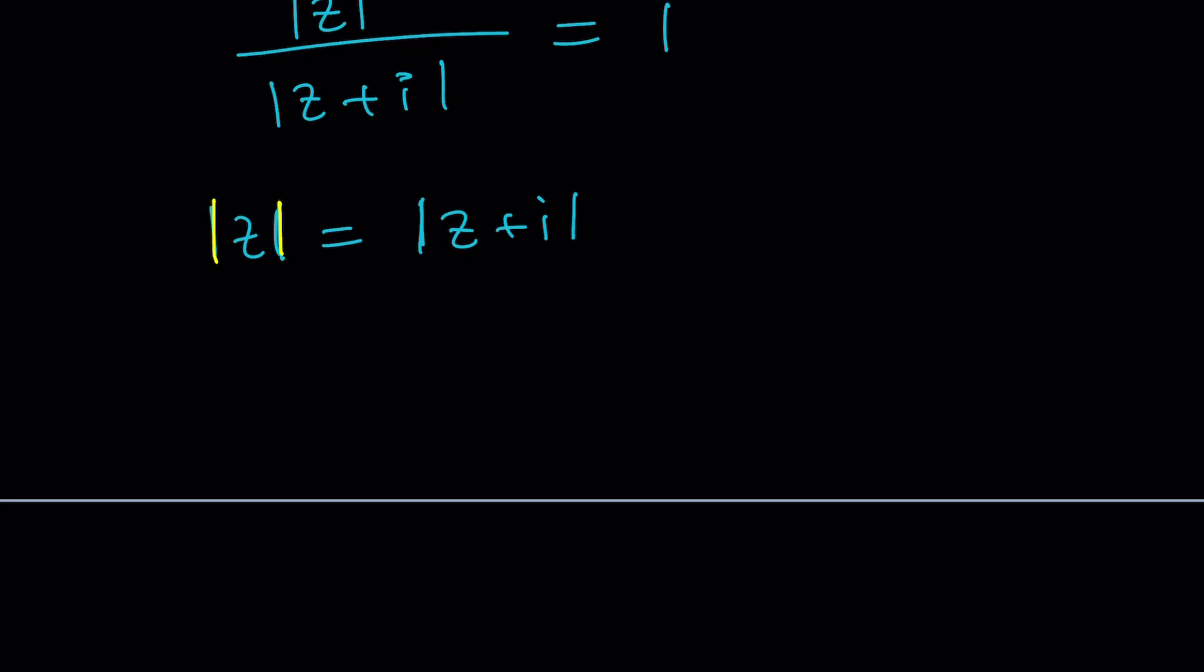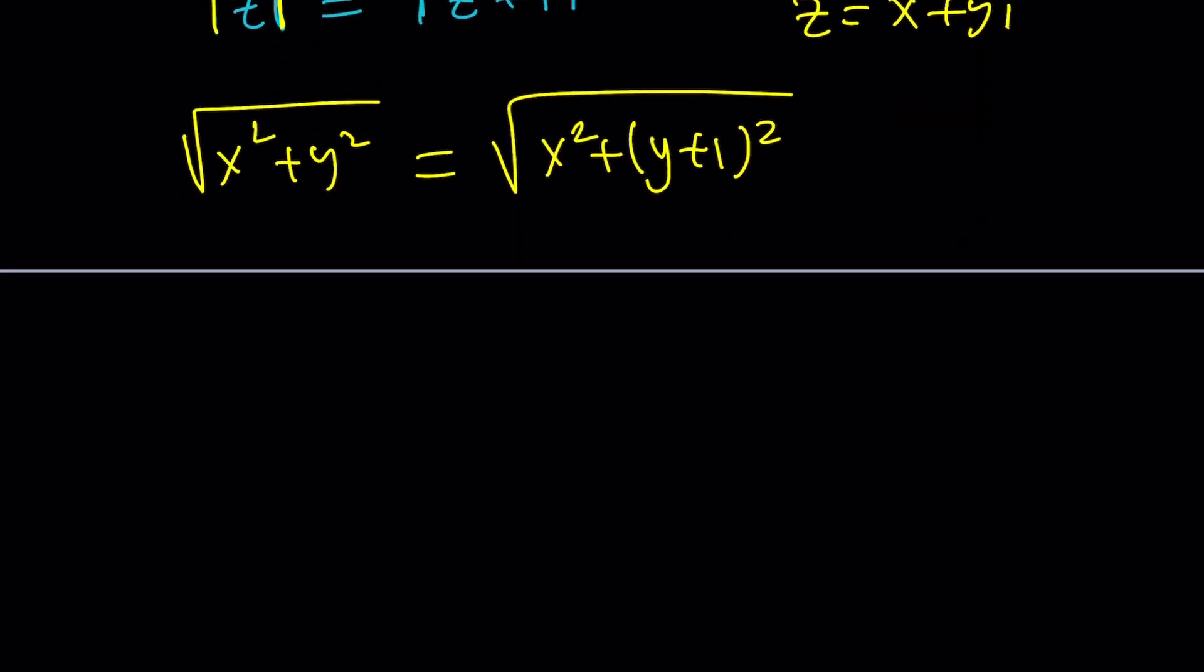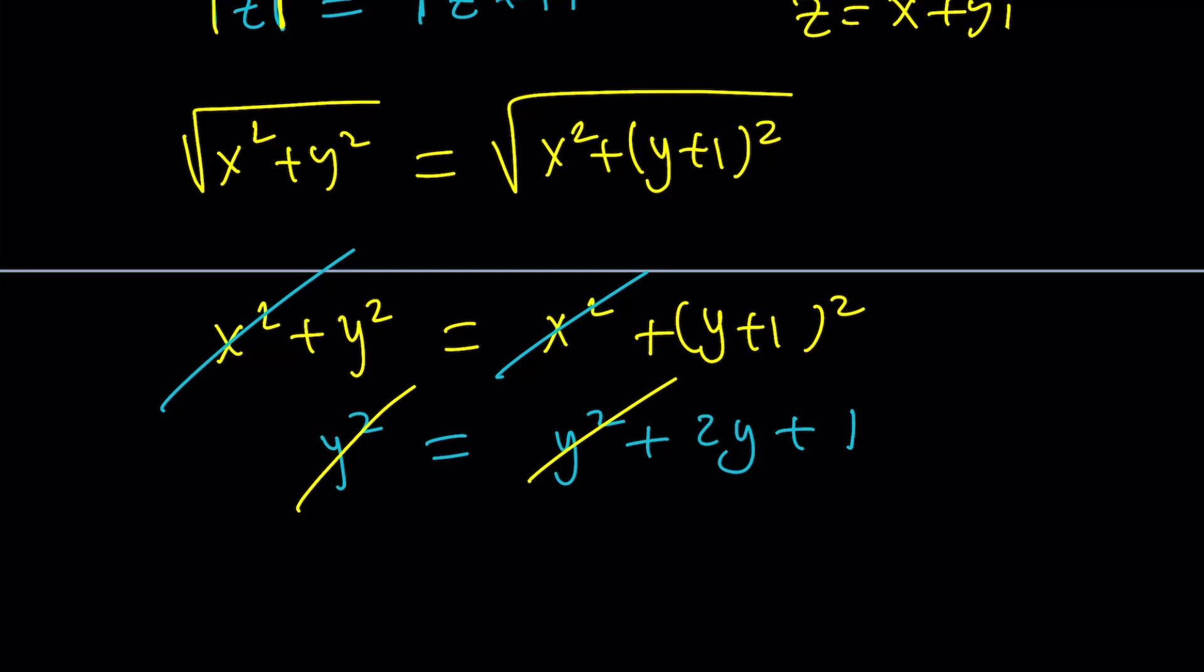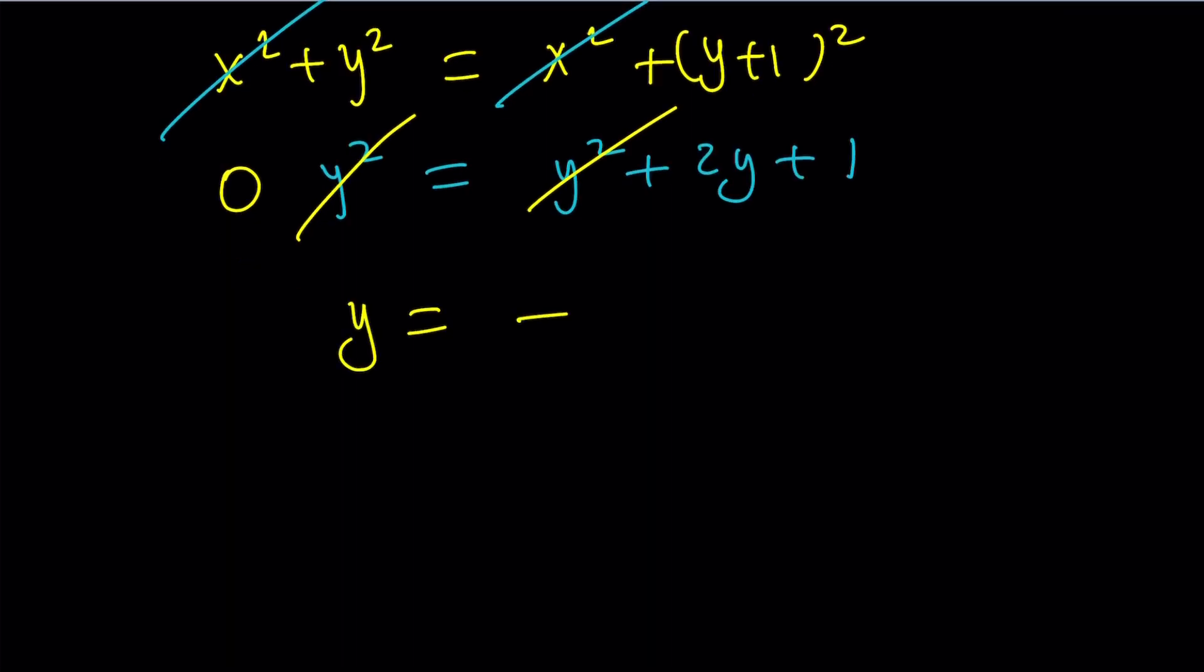So if z is x plus yi, this is a locus problem. This is going to be the square root of x squared plus y squared, and this is going to be the square root of x squared plus (y+1) squared. Now if you square both sides, something magical happens. x squared disappears. That's what is so great about the second method. Not only that, but y squared also disappears. No more squares. This becomes zero and y becomes negative one half.